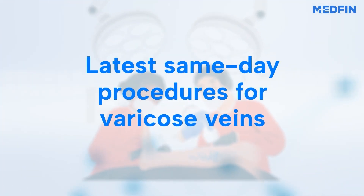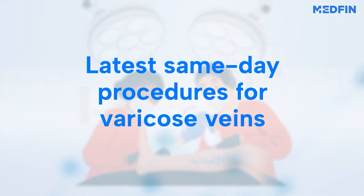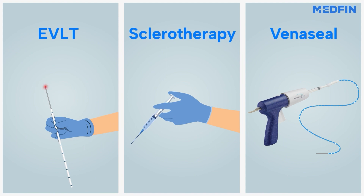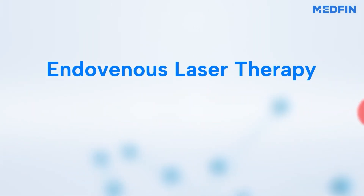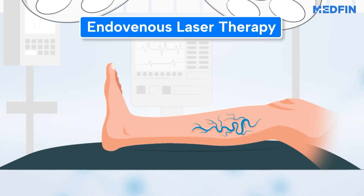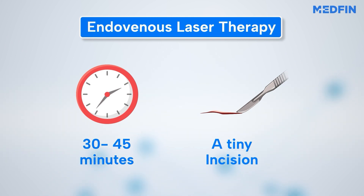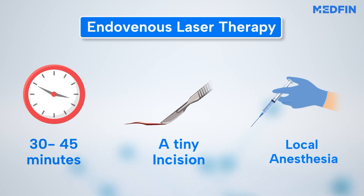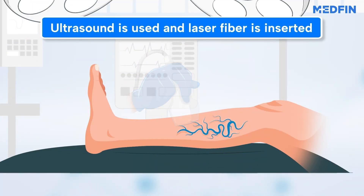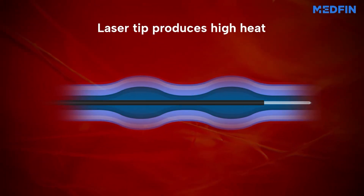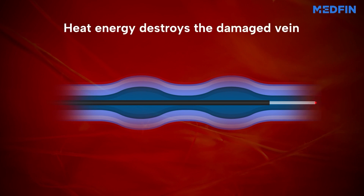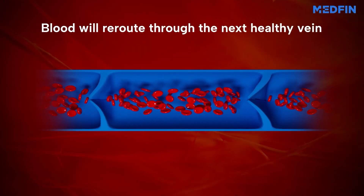Don't worry — there are same-day surgical procedures to treat varicose veins. The latest procedures are EVLT, Sclerotherapy, and Venaseal. EVLT is a modern fix for varicose veins. The duration of this procedure is usually less than an hour, and only a tiny incision is needed. Since it's not a complex procedure, EVLT requires only local anesthesia to numb the specific area. Ultrasound is used for accuracy, and a tiny laser fiber is inserted into the varicose vein. The laser tip then produces high heat energy into the vein, destroying the damaged vein, and blood then reroutes through other veins.